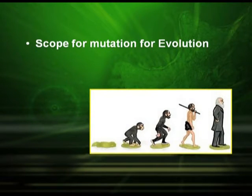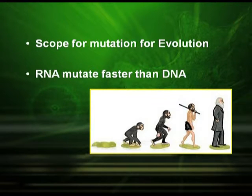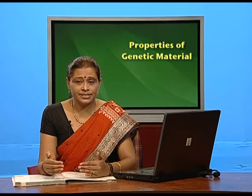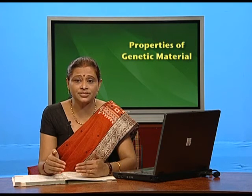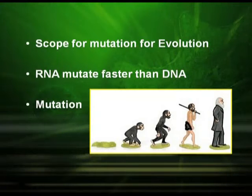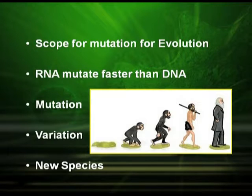There is another important and interesting fact: RNA mutates faster than DNA. Mutation is important because mutation gives rise to variation and these variations give rise to evolution. The next important property of genetic material is that the genetic material is able to express.